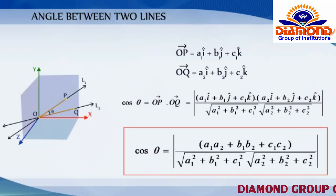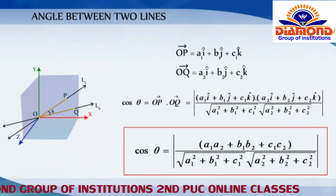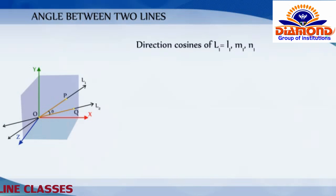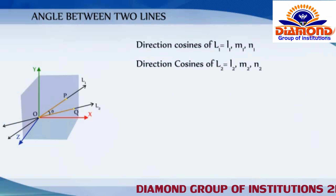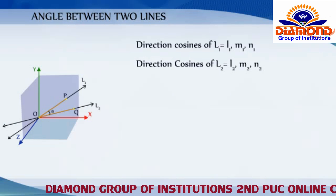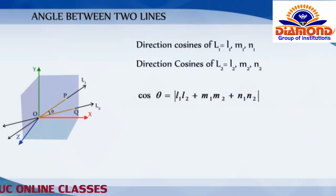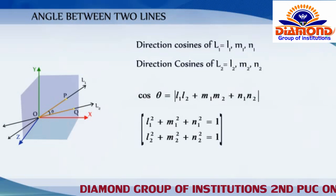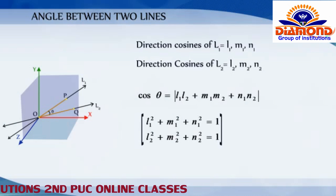If instead of direction ratios, direction cosines L1, M1, N1 for line L1 and L2, M2, N2 for line L2 are given, then the angle between these two lines is: cos theta equals the modulus of (l1·l2 plus m1·m2 plus n1·n2), since l1² plus m1² plus n1² and l2² plus m2² plus n2² are both equal to 1.